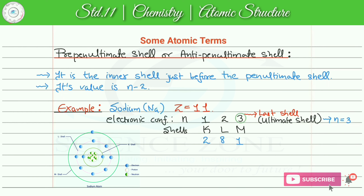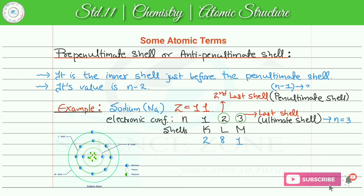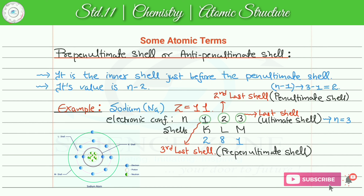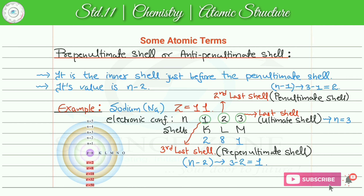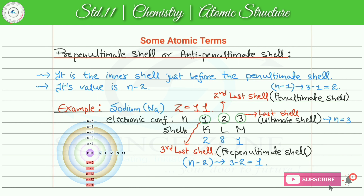Second shell is the second last shell, known as pen ultimate shell, इसकी value है n-1, जो की है 3-1 = 2। And this first shell is our third last shell, that is pre-pen ultimate shell, और इसकी n की value है n-2, that is 3-2 = 1। तो किसी भी element के electronic configuration में तीन types के shells express किये जा सकते हैं: last shell is ultimate, second last is pen ultimate, and third last is pre-pen ultimate shell।